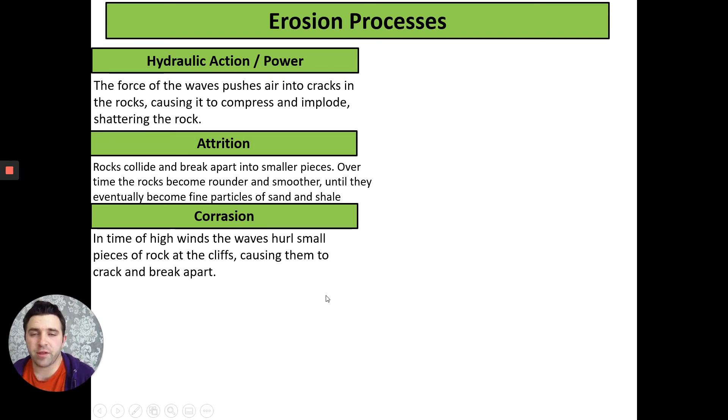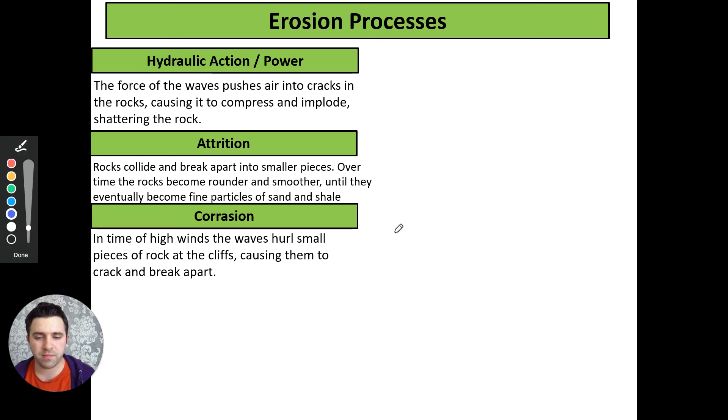Corrasion is our third erosive process and in times of high winds the waves will pick up and hurl pieces of rock at the cliffs. This causes parts of the cliff to crack and break apart, shattering it. We've got our cliff face, our water with a big wave because we've got high winds, and we get rocks being thrown at the cliff face from the water causing cracks, little bits to break off.